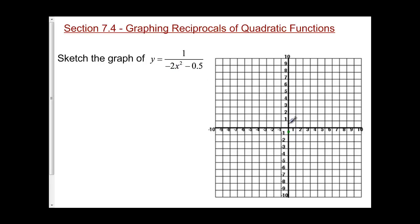Because my a value is negative 2, I'm going to go over 1, down 2, and do the same thing on the other side. Then I'm going to go over 2, down 8, and the same thing on the other side. The green line represents my original quadratic function.